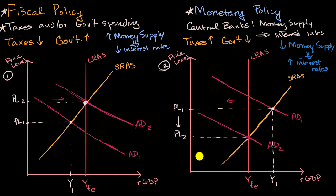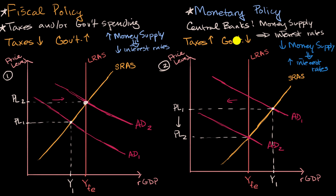The big takeaway here is that fiscal policy and monetary policy seldom act in isolation. Oftentimes, when we're at a negative output gap, you have expansionary policies in both dimensions. And in a positive output gap, it might be prudent to have contractionary policies in both dimensions. Now, one question you might ask is: what if they go in opposite directions? What if fiscal policy is expansionary while monetary policy is contractionary? Well, there it depends — they might offset each other. In fact, sometimes the central bank might have a contractionary policy because they think the federal government is being too expansionary.